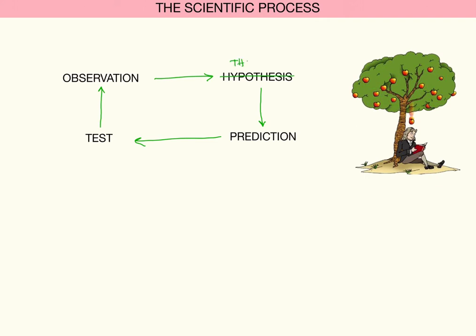So Newton's underneath the tree, and the apple falls on his head. He comes up with a hypothesis, a theory that two bodies of mass attract one another. He makes a prediction and says, I guarantee you my theory's good because it should work under a peach tree or a pear tree or any type of tree.